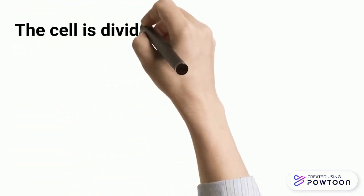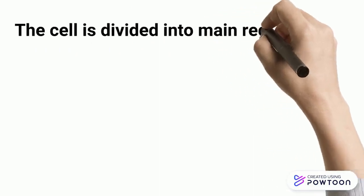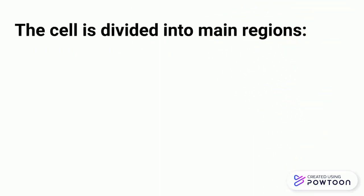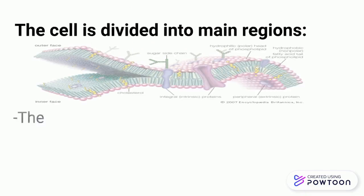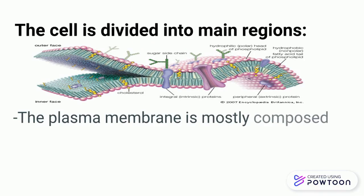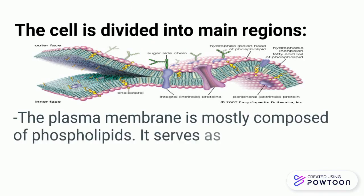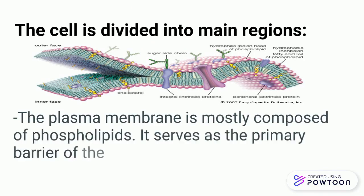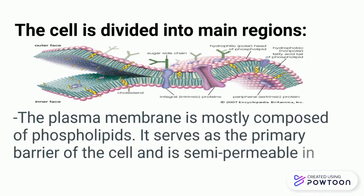Class, this time we will identify how a cell is divided into main regions. First, we have the plasma membrane. As we all know, the plasma membrane is mostly composed of phospholipids. It serves as a primary barrier of the cell and has a semi-permeable nature.